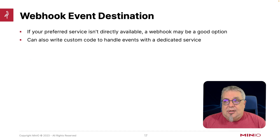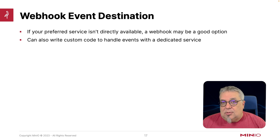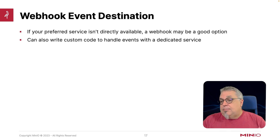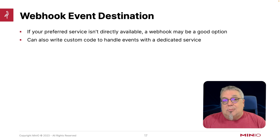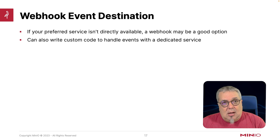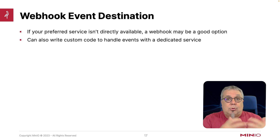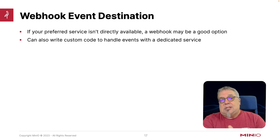The webhook event destination is what you're going to use if your preferred service isn't directly available. You can write a webhook or deploy a webhook as an excellent option if your system has a webhook available. For instance, Slack in many cases has these webhooks — you can set up a Slack webhook and connect into it. You can also write your own custom code to handle events with a dedicated service. Here's the important part: all of your webhooks need to be able to connect to a Simple Queue service. Min.io implements a Simple Queue service to actually send the events out, and what we're going to be doing is reading from that Simple Queue service.